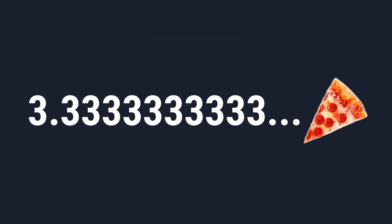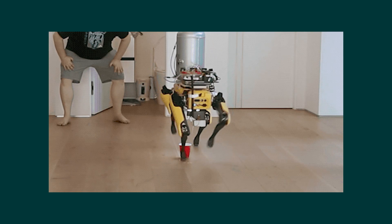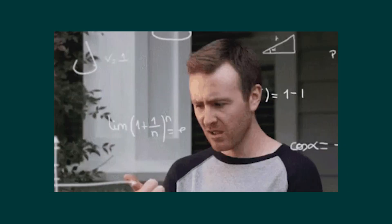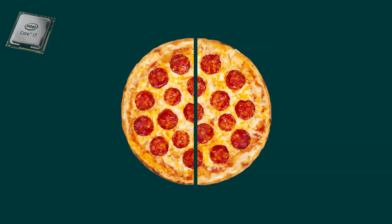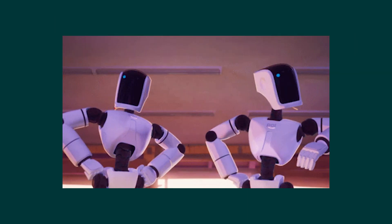The best we can do is a really close approximation. And computers will face the same problem, but more often, because they count everything based on 2. So they can divide everything in half, but no more than that.